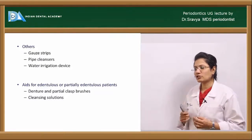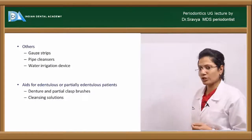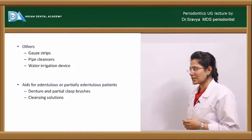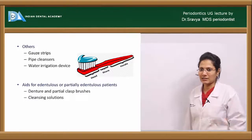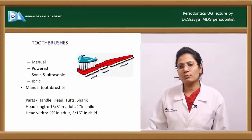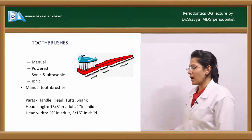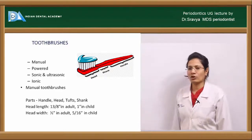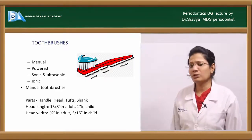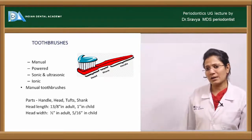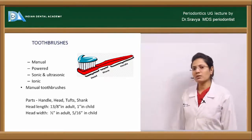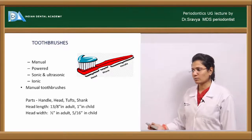Aids used for edentulous or partially edentulous patients include denture and partial clasp brushes and denture cleansing solutions. Coming to toothbrushes, they have different parts: the head, the shank, and the handle. The various types of toothbrushes available include manual, powered, sonic, ultrasonic, and ionic toothbrushes.